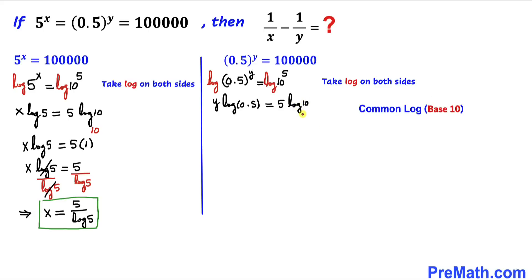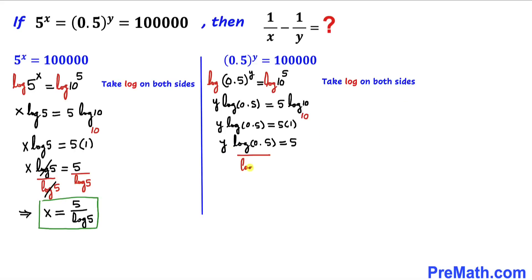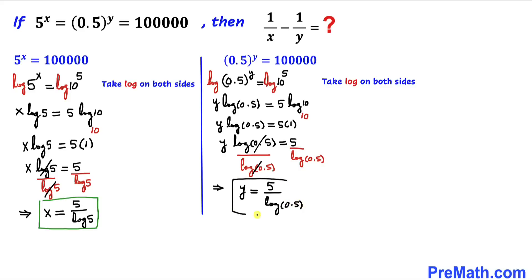Once again we are dealing with the common log, so the base is 10 by default. According to the same property, log of 10 with base 10 equals 1. So the equation becomes y times log of 0.5 equals 5. Dividing both sides by log of 0.5, our y value is 5 divided by log of 0.5.